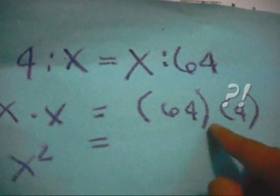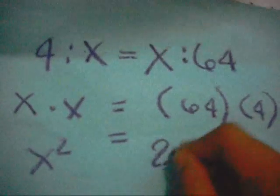X times X is equal to X squared. 64 times 4 is equal to 256.